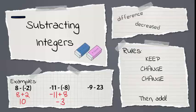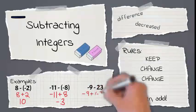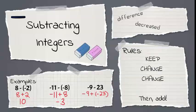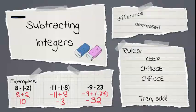Last, we have negative 9 minus 23. Keep the negative 9, change the subtraction to addition, and change 23 to negative 23. Same sign, so we add the numbers and get 32, and keep the sign, so our answer is negative.